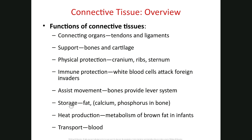Storage functions include fat stored in adipocytes — adipose is a type of connective tissue — and calcium and phosphorus stored in bone. Heat production relates specifically to brown fat found only in infants. Transport: blood is actually classified as a type of connective tissue, and of course blood transports substances throughout the body. You can see that connective tissue has a really diverse set of functions.